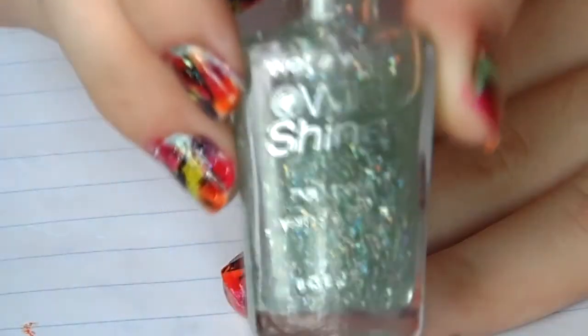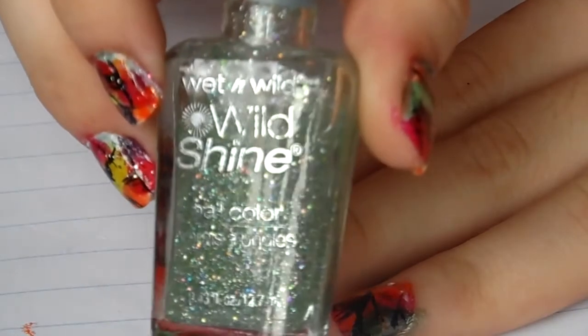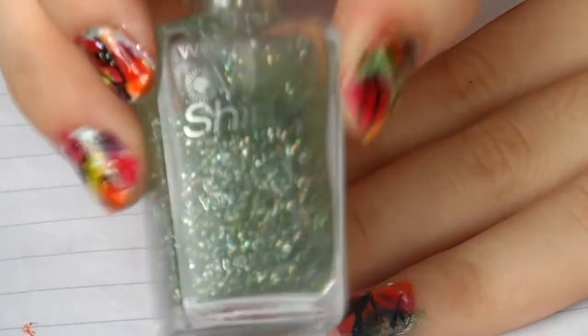Now I'm going into a glitter nail polish - Wet n Wild Wild Shine. A little bit of green got into it, but it doesn't matter, it doesn't show up green. I'm going to apply it over - this step is optional - and it's just going to look like really pretty glitter.